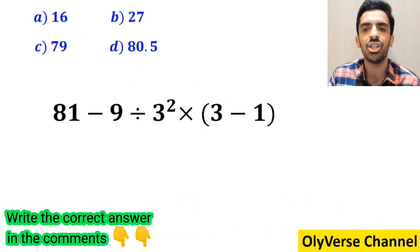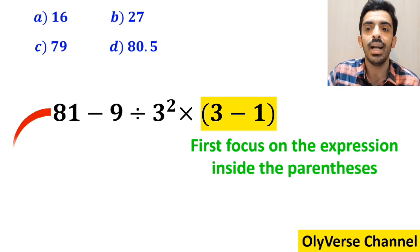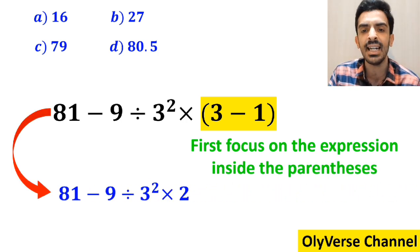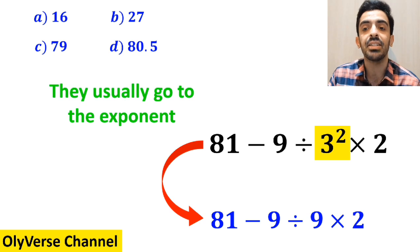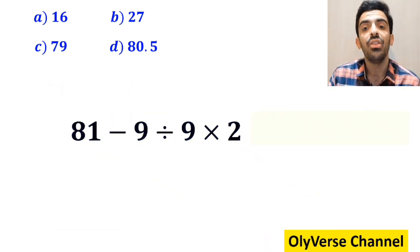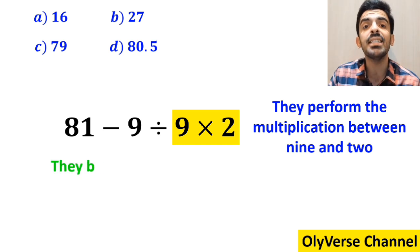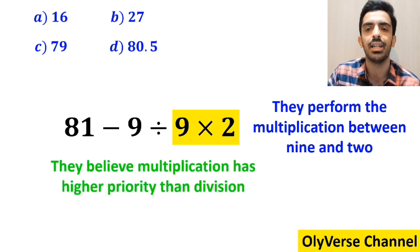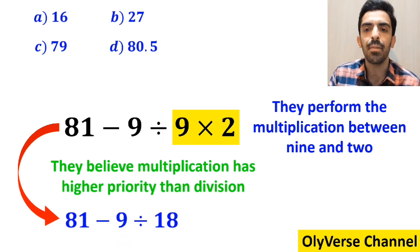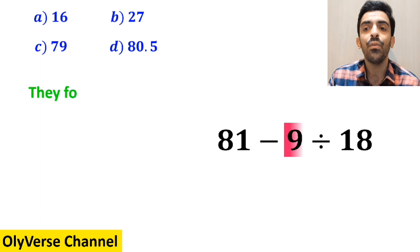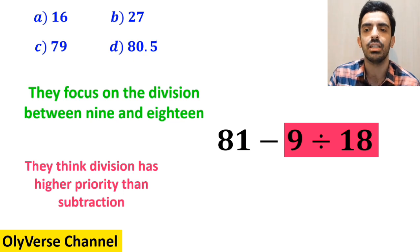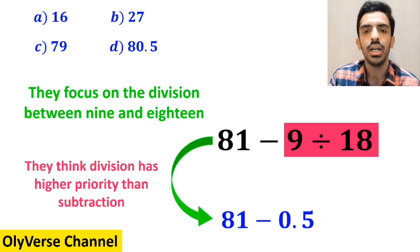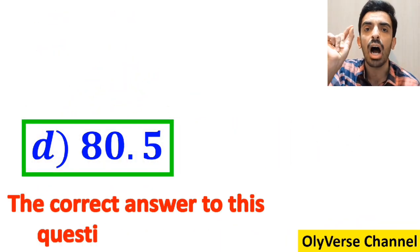Also, some other people when solving this question first focus on the expression inside the parenthesis and replace the whole expression with 81 minus 9 divided by 3 squared multiplied by 2. In the next step, they go to the exponent and simplify to 81 minus 9 divided by 9 times 2. Then they perform the multiplication between 9 and 2, believing multiplication has higher priority than division, rewriting the expression as 81 minus 9 divided by 18. Finally, they focus on the division between 9 and 18, replacing the expression with 81 minus 0.5, which equals 80.5.